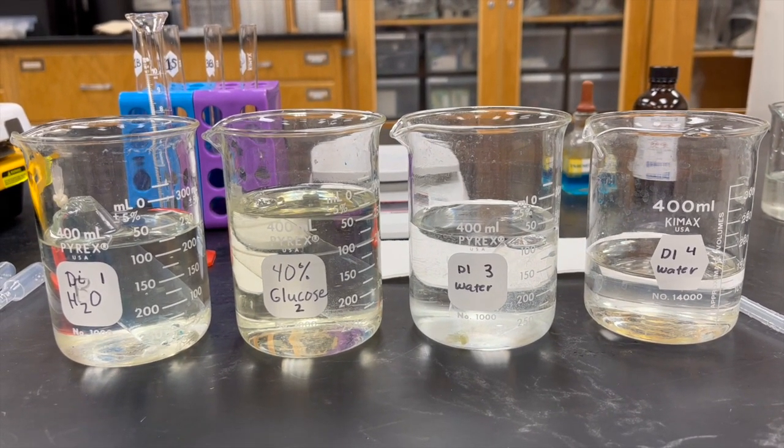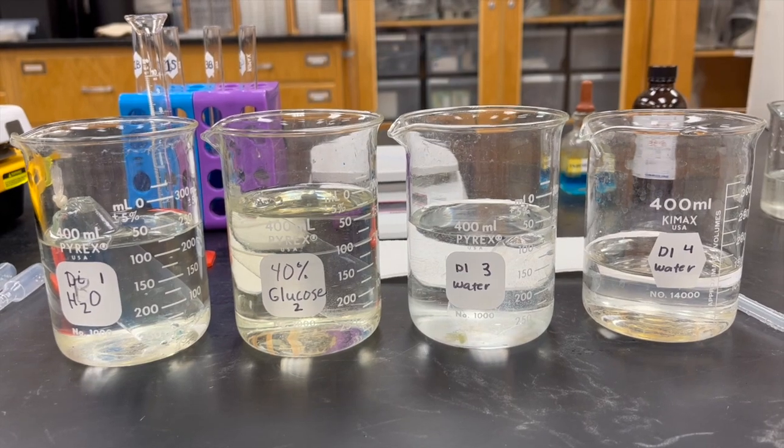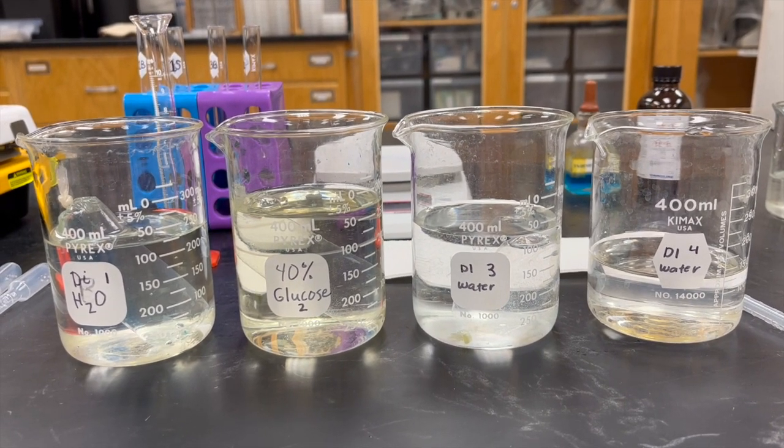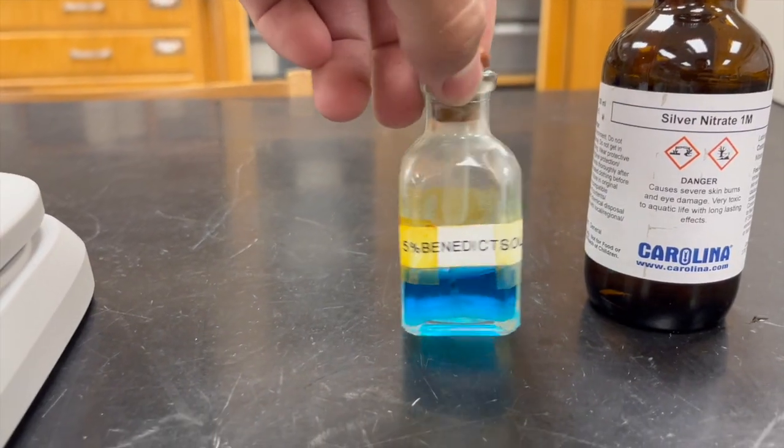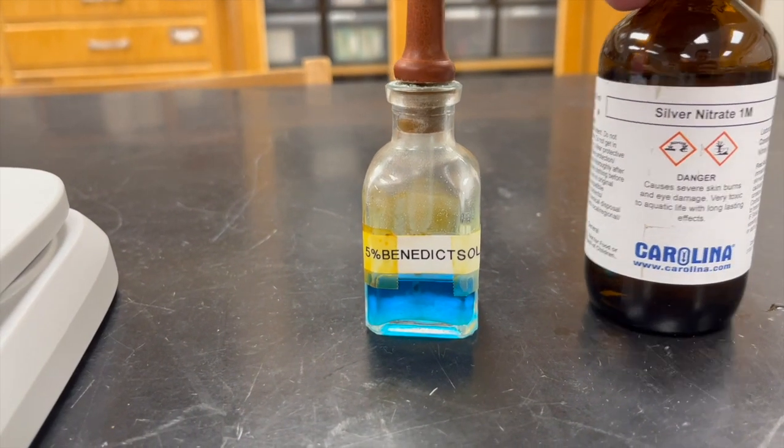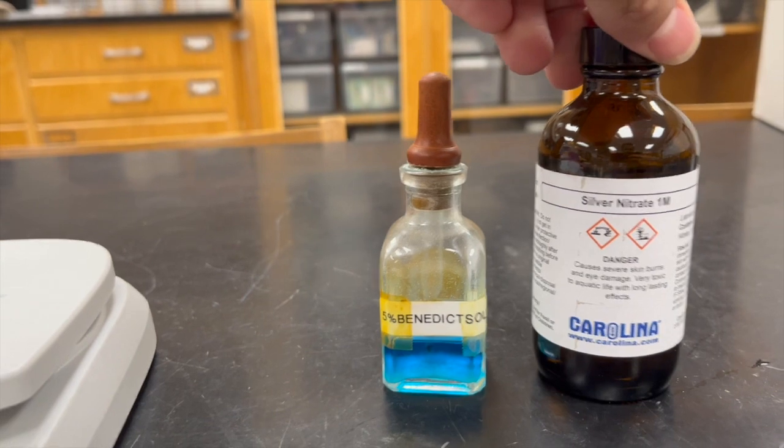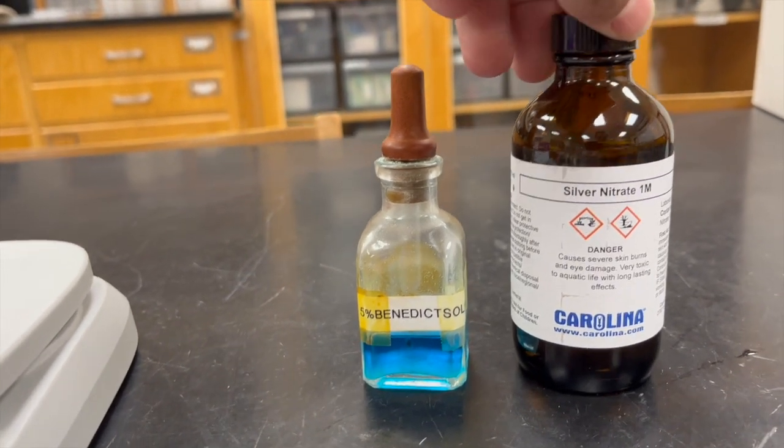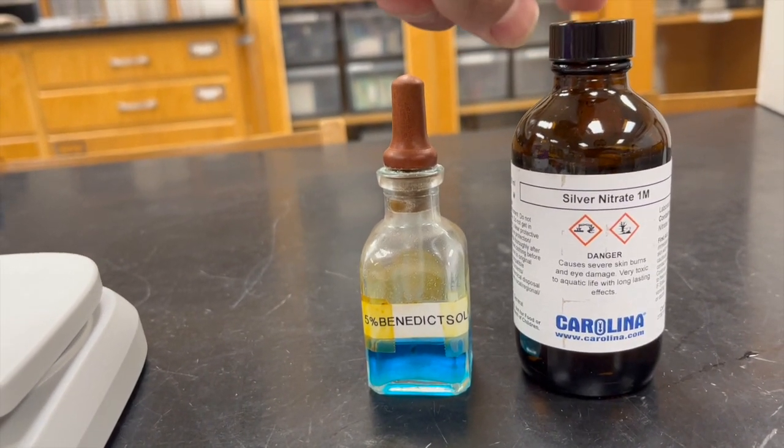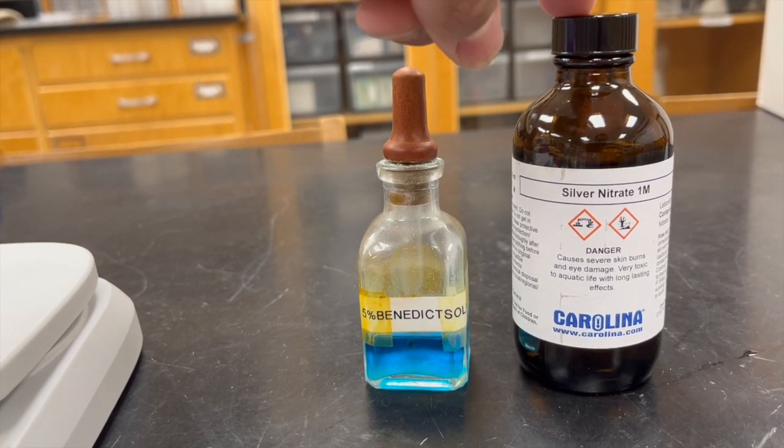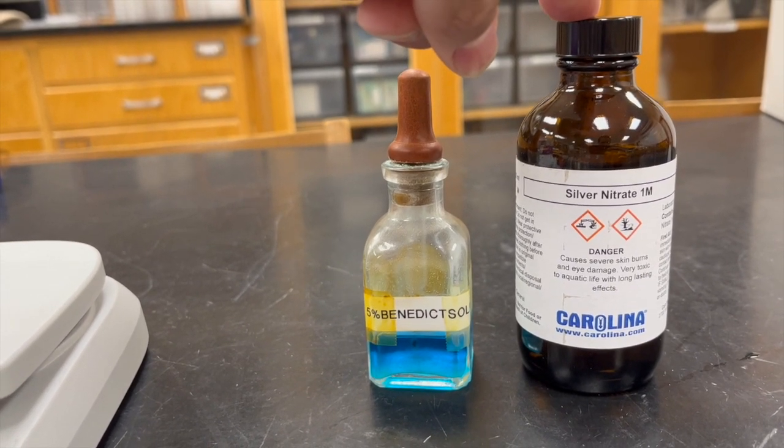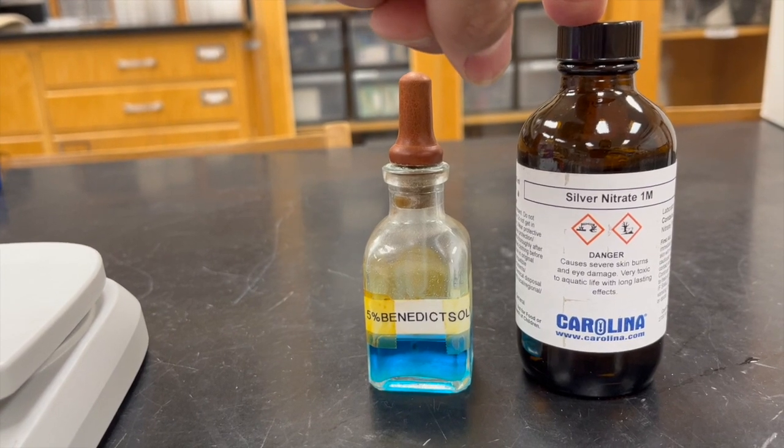After the hour is up, we're going to test for the presence of sugars and then test for the presence of salt within each of these different test tubes. Benedict's tests for the presence of sugar. Silver nitrate is what tests for salts. This is a one molar solution, so you'll add 3 milliliters of this into 100 milliliters of DI water.